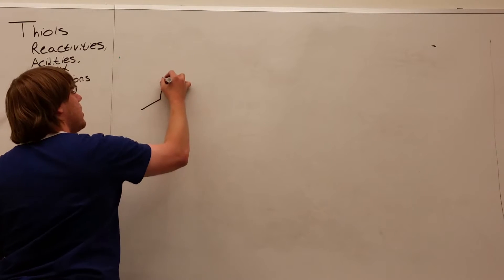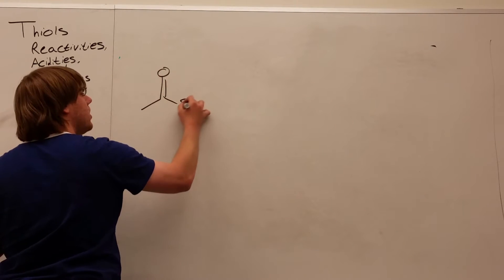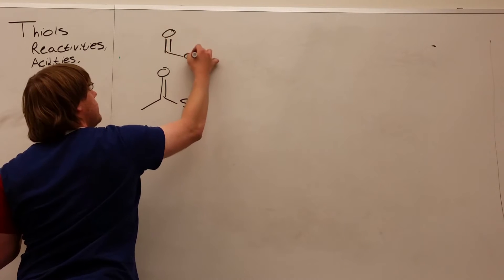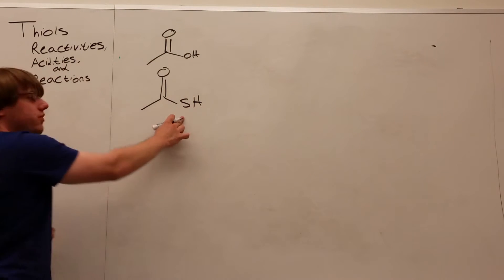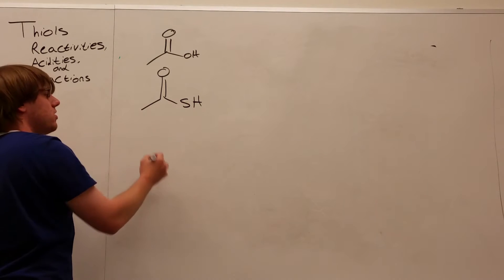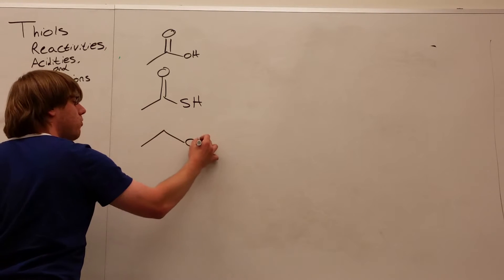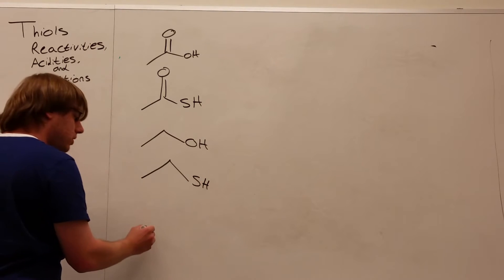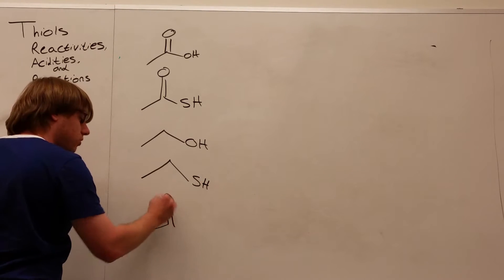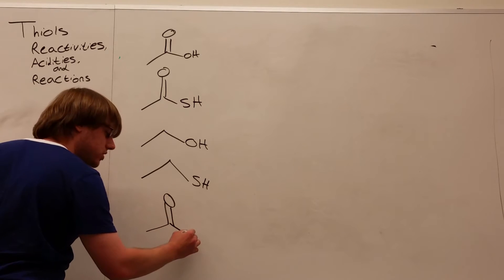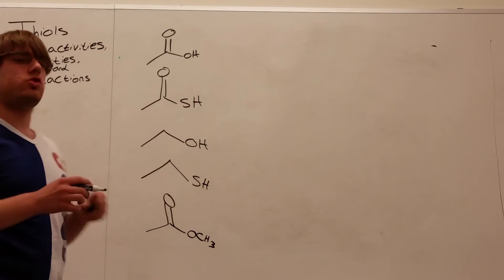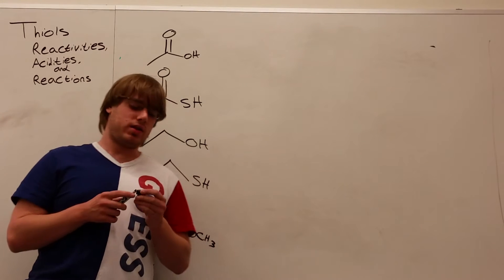I'm going to give you carboxylic acid. I'm going to give you the thiol equivalent of carboxylic acid, where you have SH. I'm going to give you a regular OH, I'm going to give you a regular SH, and I'm going to give you an ester, a regular carbon-oxygen ester, so OCH3. And I want you to rank these five structures in order of increasing acidities.